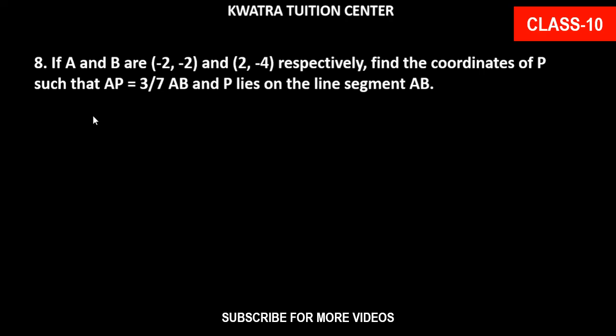Let's start with question number 8. It says if A and B are these points respectively, find the coordinates of P such that AP is equal to 3 over 7 AB and P lies on the segment AB.